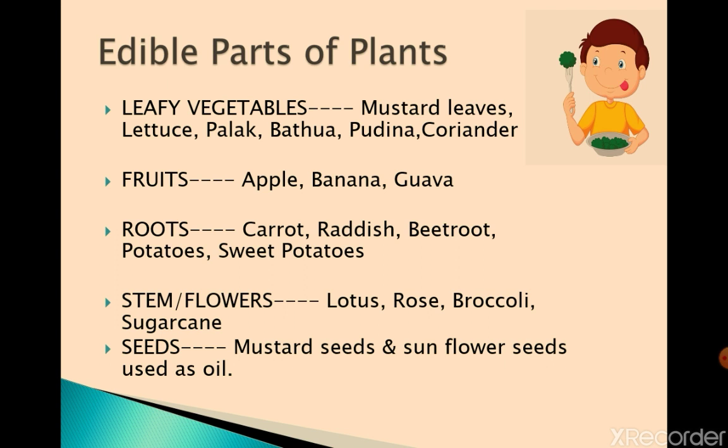There are some parts of plants which are edible. For example, leafy vegetables like mustard leaves, latiuk, palak, batwa, pudina or coriander. We also eat fruits, which are also parts of the plant — like apple, banana, guava and more. The third edible part of a plant is the root: carrot, radish, beetroot, potatoes and sweet potatoes. Some foods are also obtained from the stem or flowers of plants, like lotus, rose, broccoli and sugarcane.